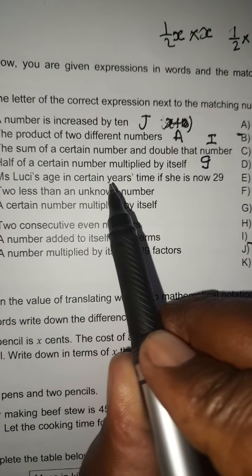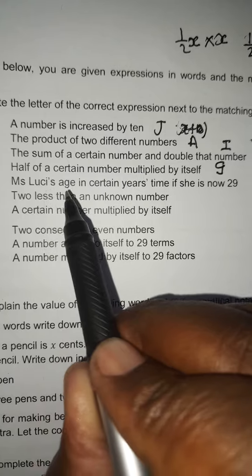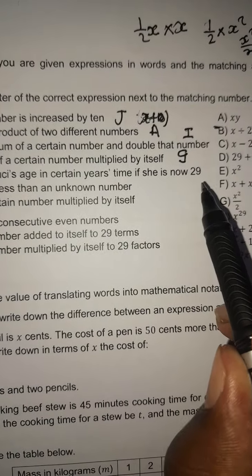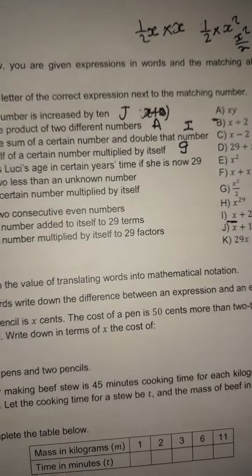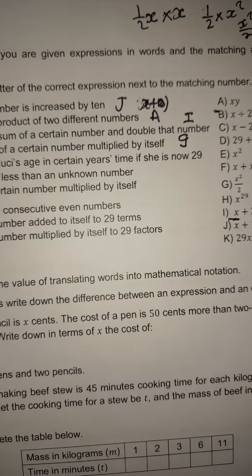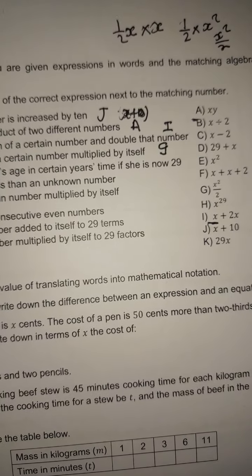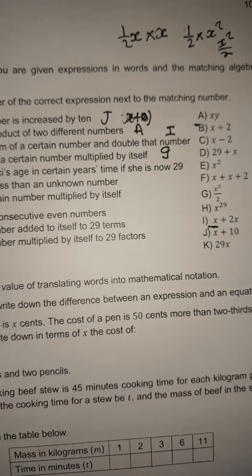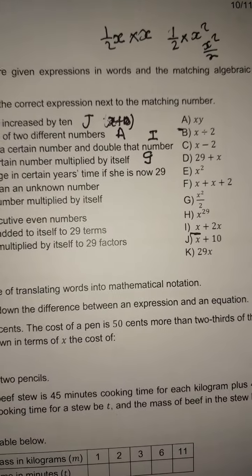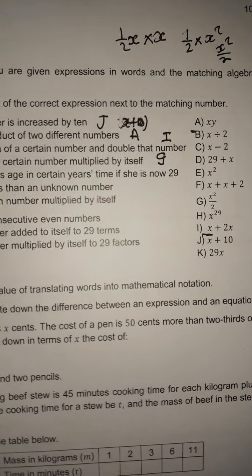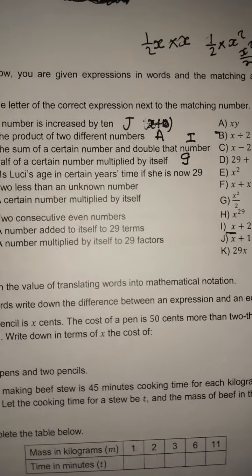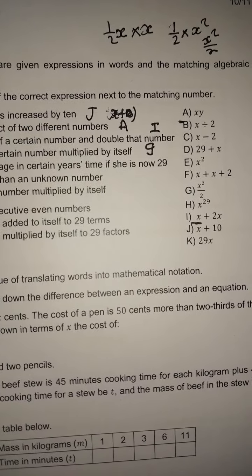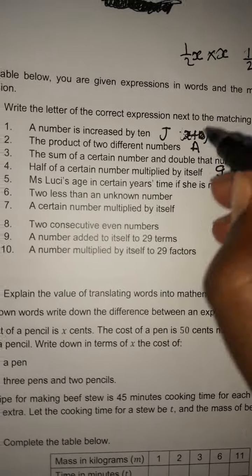'Miss Lucy's age in 17 years' time, if she is now 29' — so that would be 29 plus x. In this case we will go with D here.